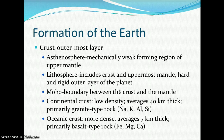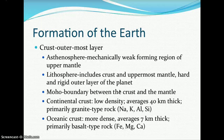Finally, you have the crust, which is the outermost layer of Earth, divided into several parts. The asthenosphere is a mechanically weak-forming region of the upper mantle. The lithosphere includes the crust and the uppermost mantle — the hard and rigid outer layer of the planet. The moho is the boundary between the crust and the mantle.